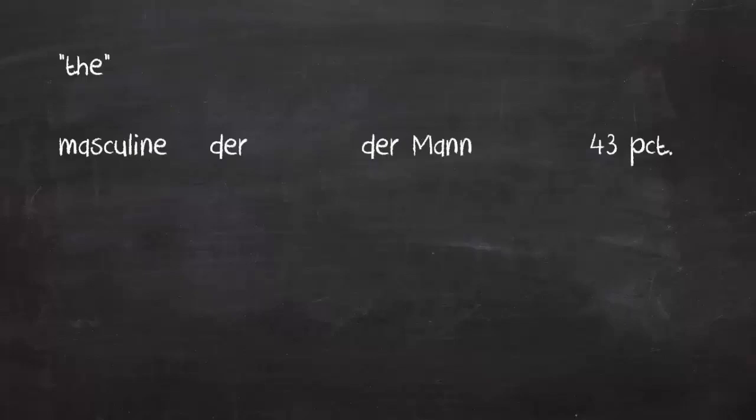So let's start with a quick look at the definite articles in German. The masculine definite article is 'der' — for example, 'der Mann,' meaning 'the man.' Of all the nouns in the German language, 43% are masculine.